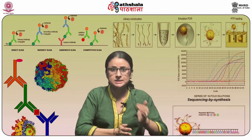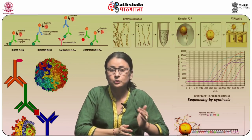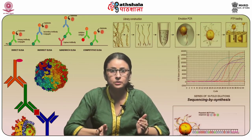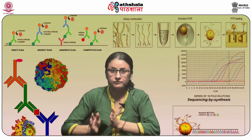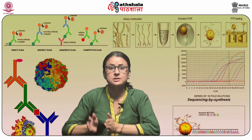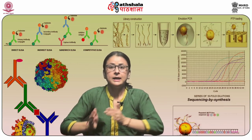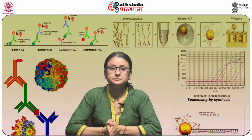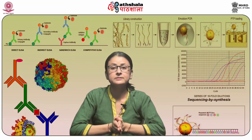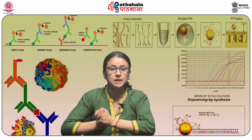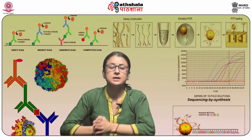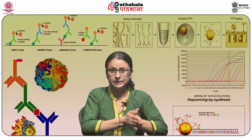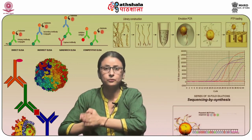Next is Listeria monocytogenes, which grows at refrigerated temperatures. The main targets are pregnant women — it causes disease in them and in infants. Young and elderly people are also main targets of Listeria monocytogenes. It can be avoided with proper cleaning and by taking cooked food.